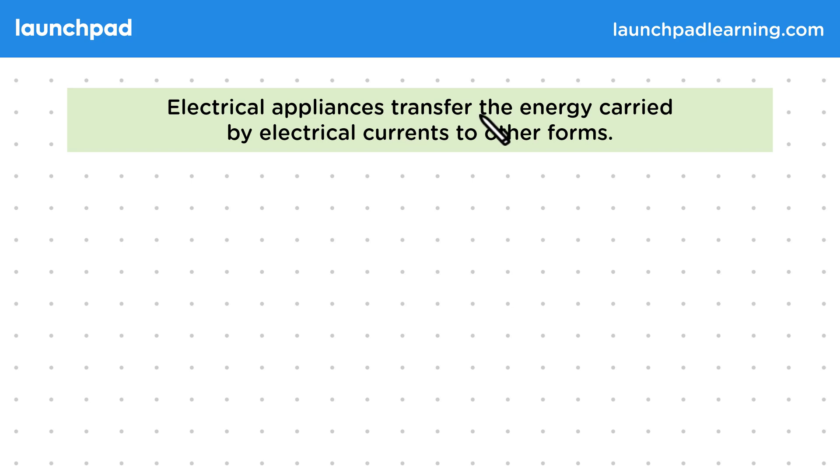Electrical appliances transfer the energy carried by electrical currents to other forms.